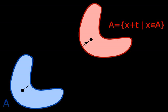In physics and mathematics, continuous translational symmetry is the invariance of a system of equations under any translation.